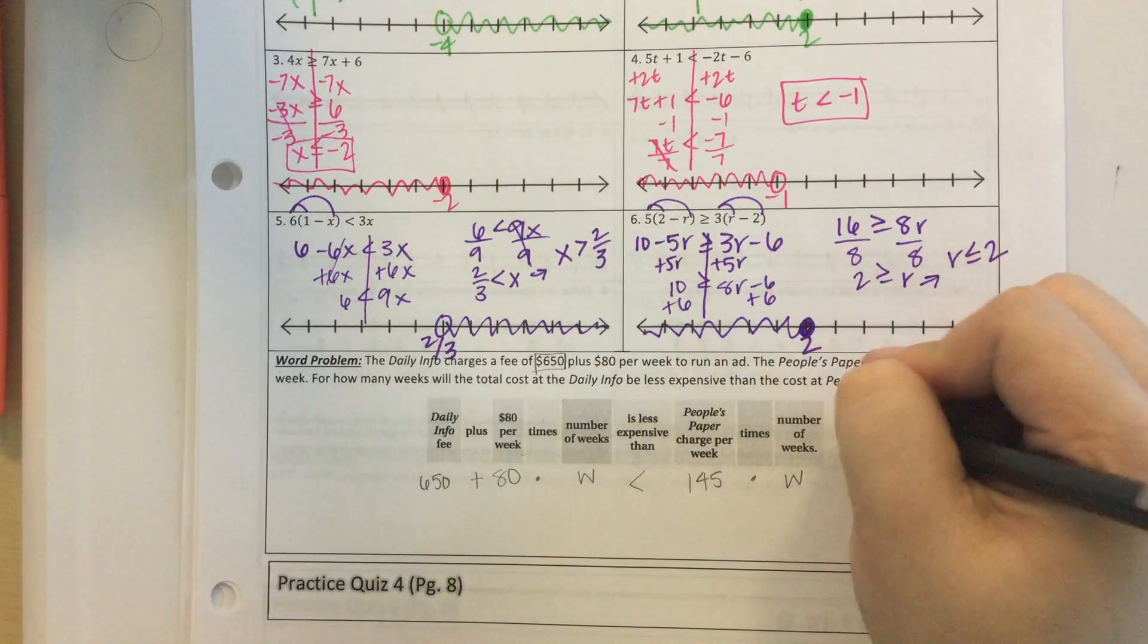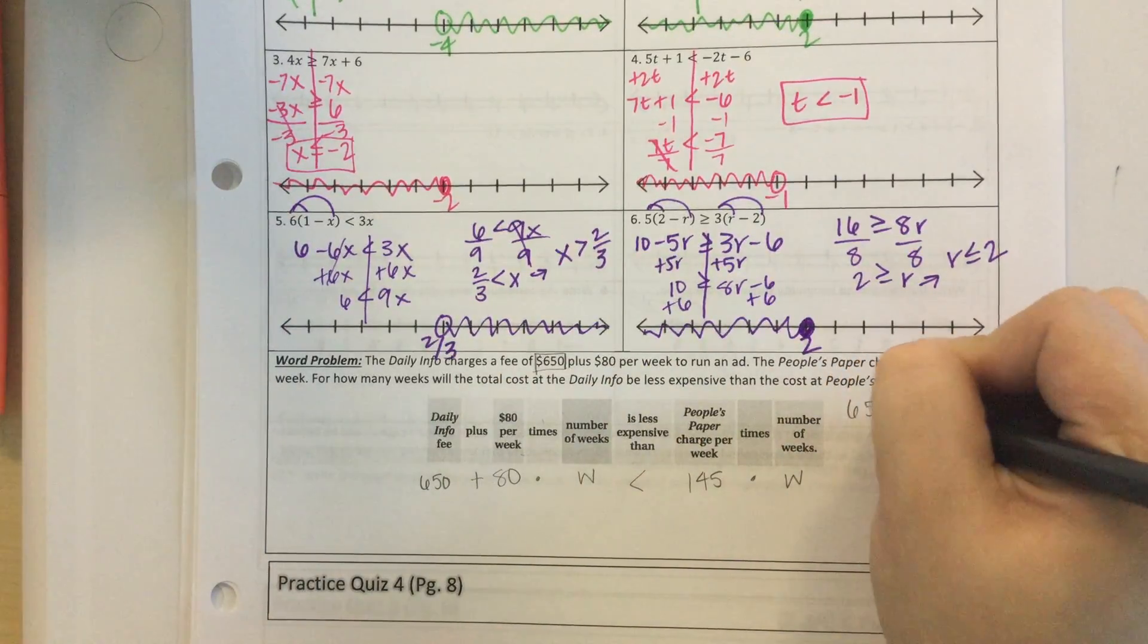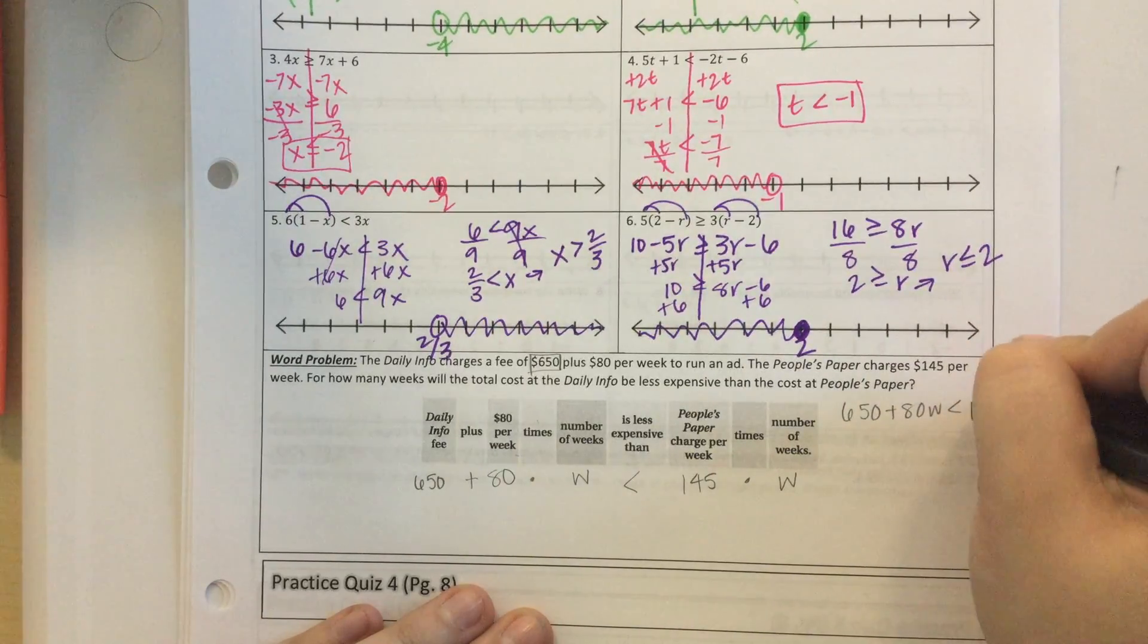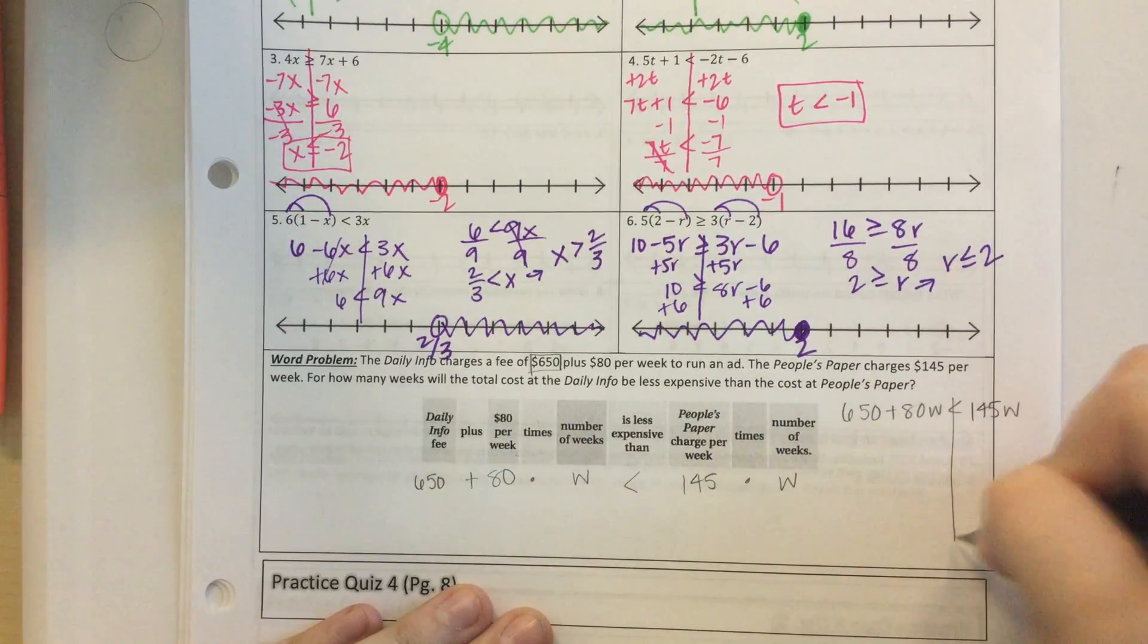Let's write it so that we can solve it. $650 plus $80W is less than $145W. Now we can solve it.